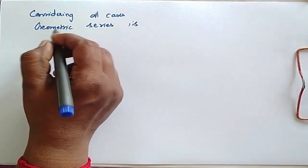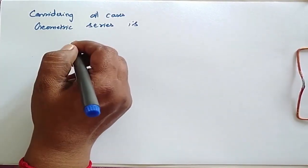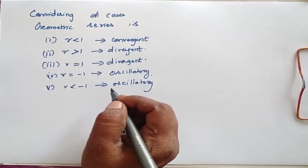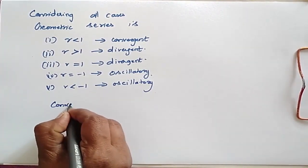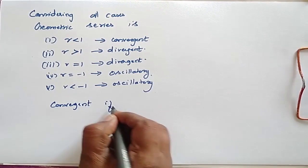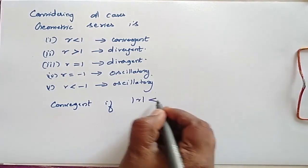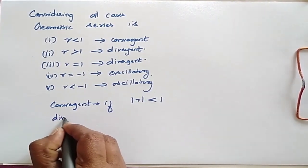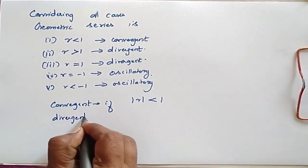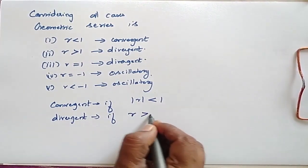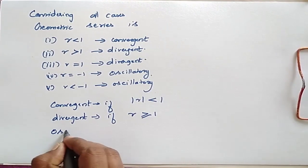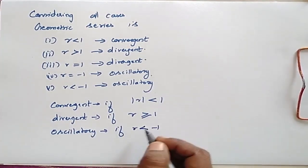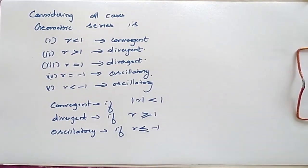Considering all the cases, we can conclude: the series is convergent if |r| < 1; the series is divergent if r is greater than or equal to 1; and the series is oscillatory if r is less than or equal to -1.